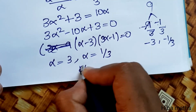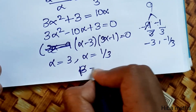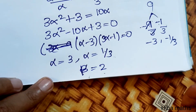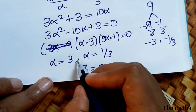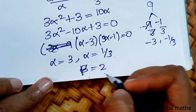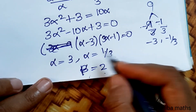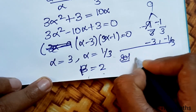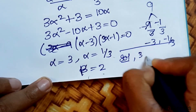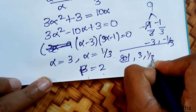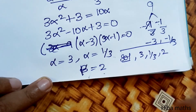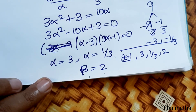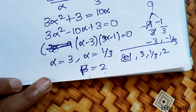The value of β was already found to be 2. So the three roots of the equation are 3, 1/3, and 2. That's the complete solution. Thank you so much for watching.